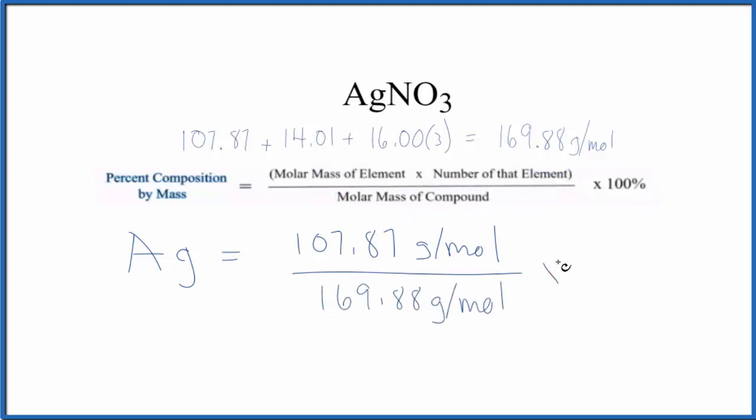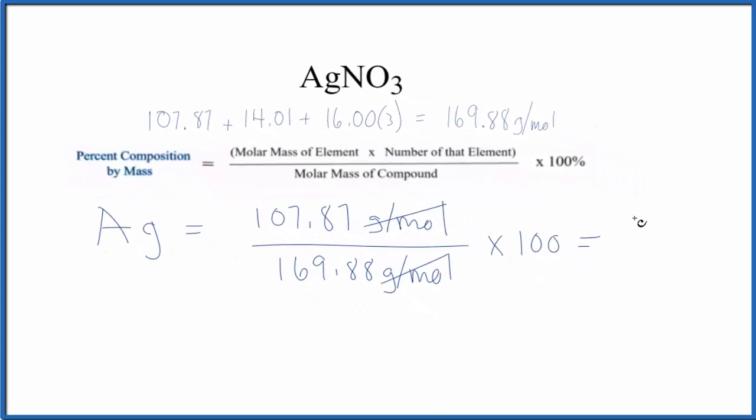We'll multiply by 100 to get a percent. And then grams per mole cancels out. It's on the top and the bottom. We end up with a percent composition for the silver in silver nitrate, 63.50%.